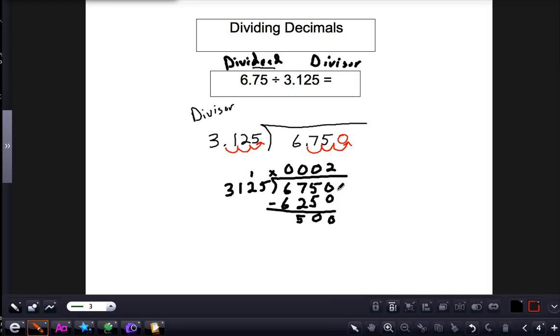So in order to do that, I would have to put the decimal behind 6750 where it does exist - we just don't normally put it - and then bring it straight up in the quotient. And now I can add another zero and continue to long divide so that I don't get a remainder. So now that 500 left over becomes 5000, and 3000 can fit into 5000 one time.